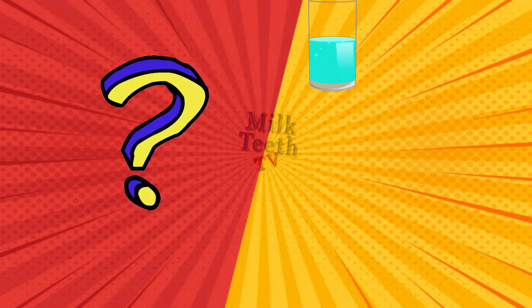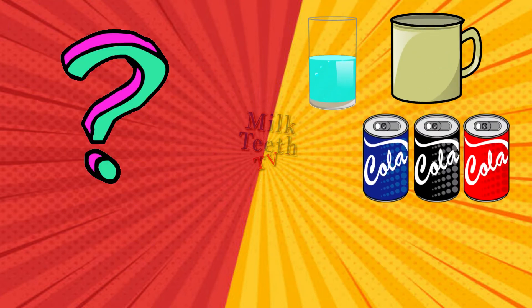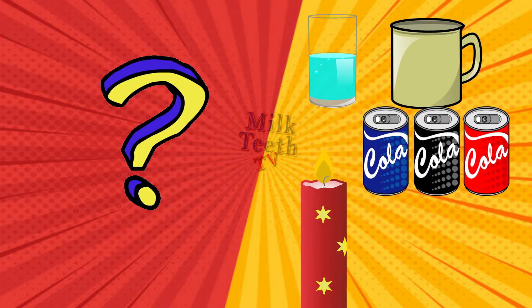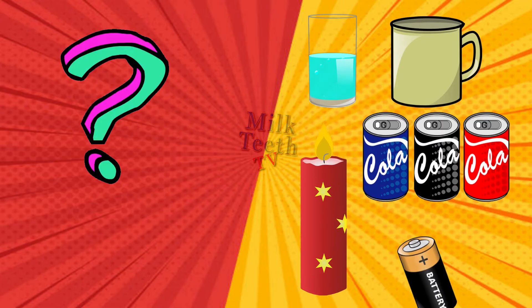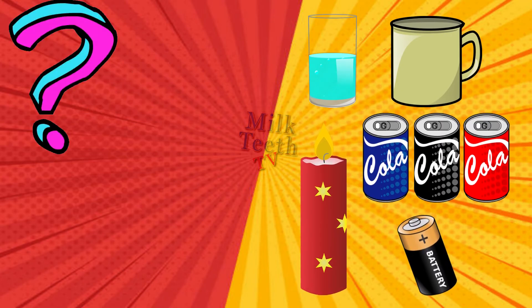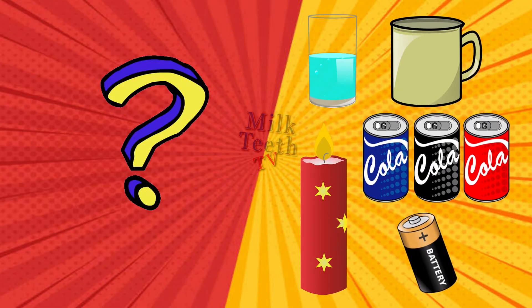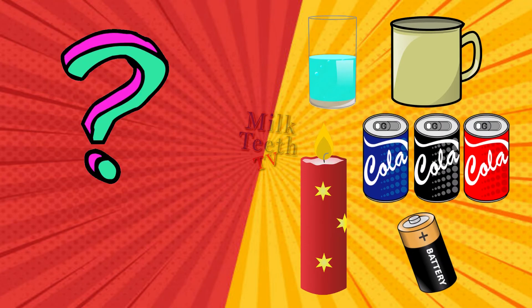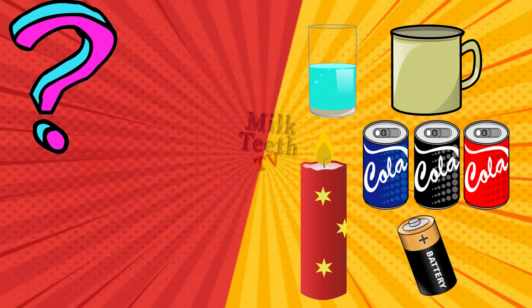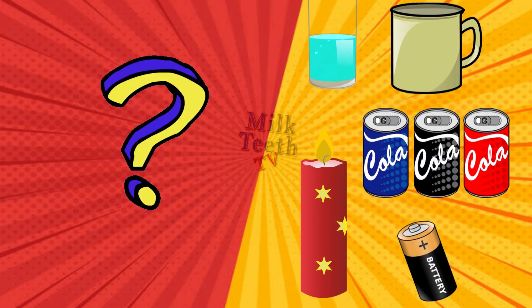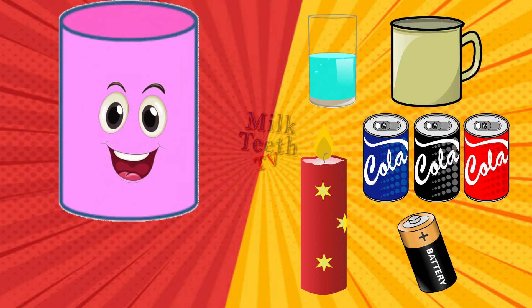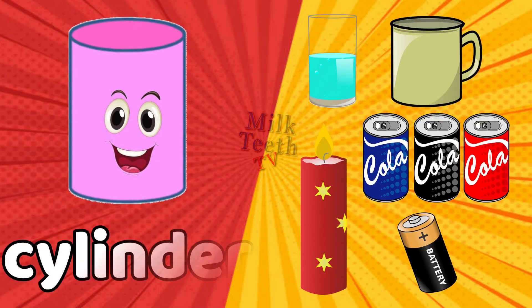A glass of water, a coffee mug, cola cans, a candle, and a battery — they all have the same shape. Which shape is that? That's a cylinder!